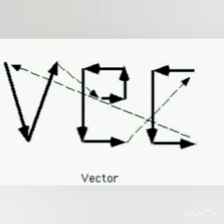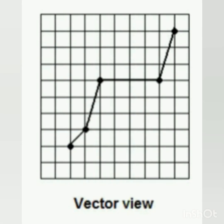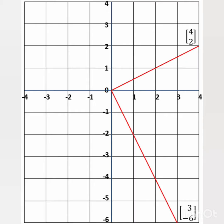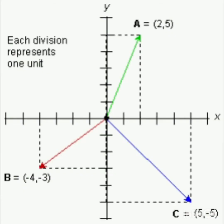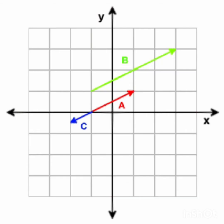Vectors help us in creating digital images through a sequence of commands using mathematical statements and equations. Basically these equations are translated into points which form parts on the Cartesian plane. These points are scaled and help us in creating lines, curves, polygons, and 2D and 3D images.